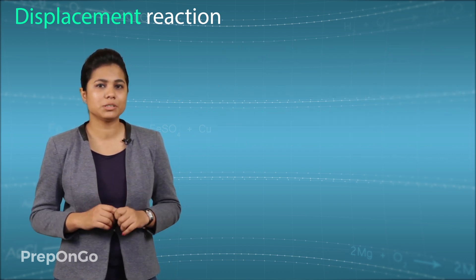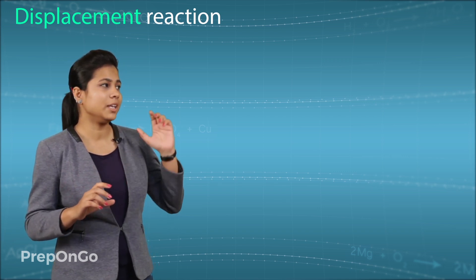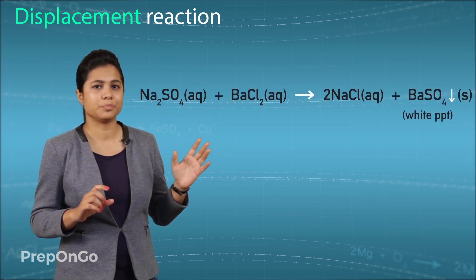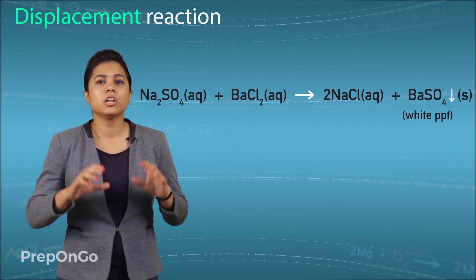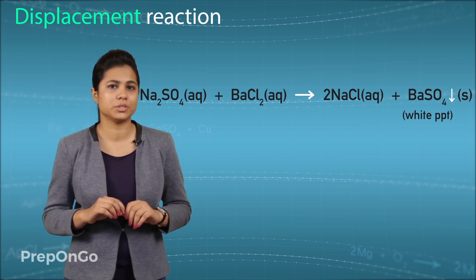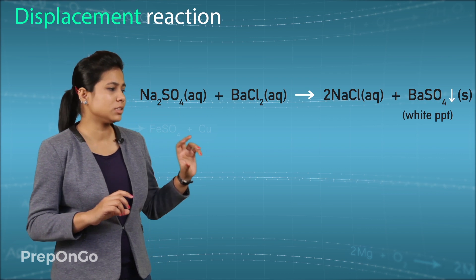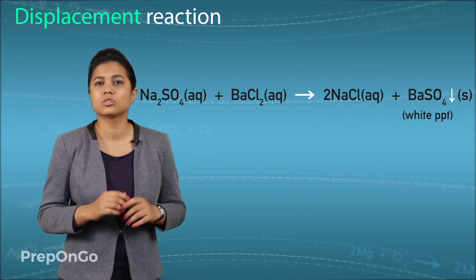One of the common examples of double displacement reaction is the reaction between barium chloride and sodium sulphate. Barium sulphate and sodium chloride are formed. Now you can also see in this reaction that there is a formation of white insoluble substance in the water which remains in the bottom of the test tube. This type of substance is called a precipitate.